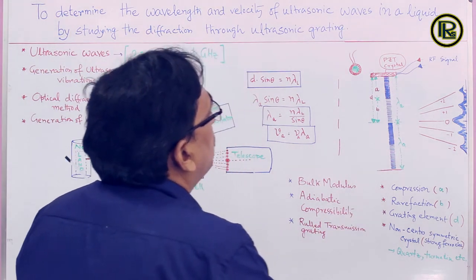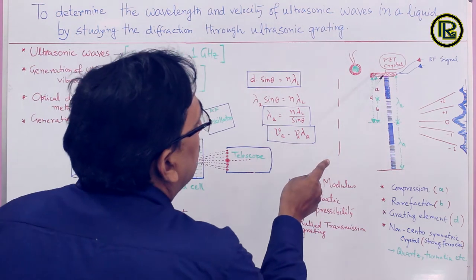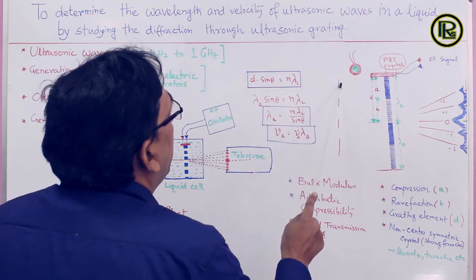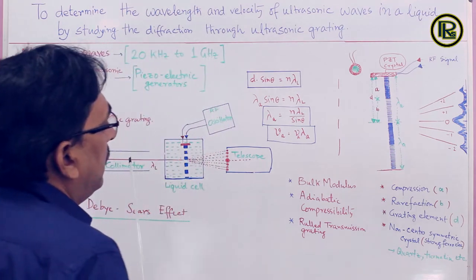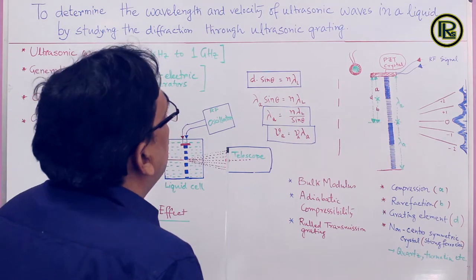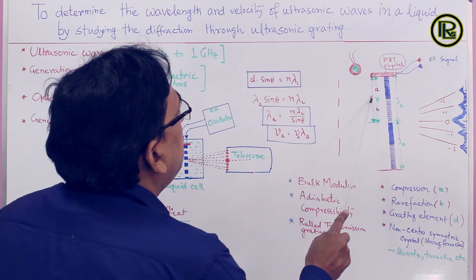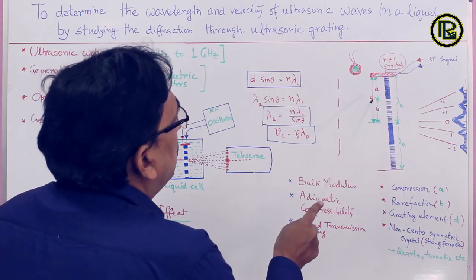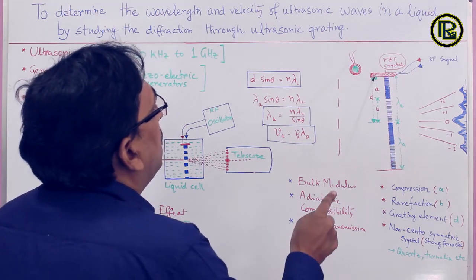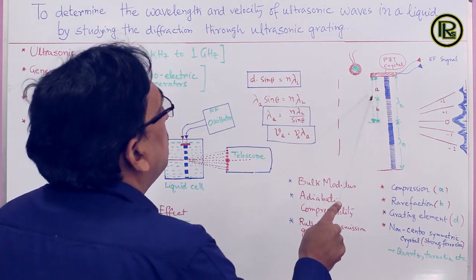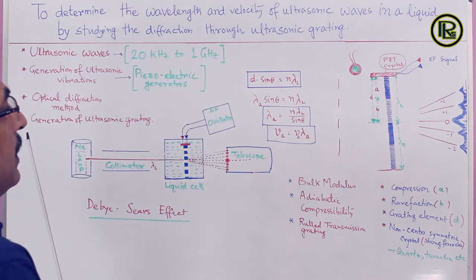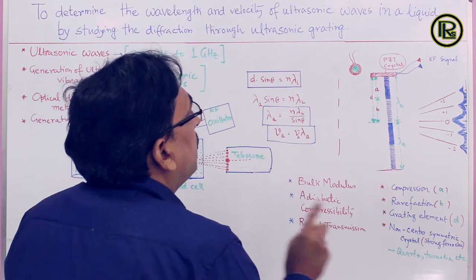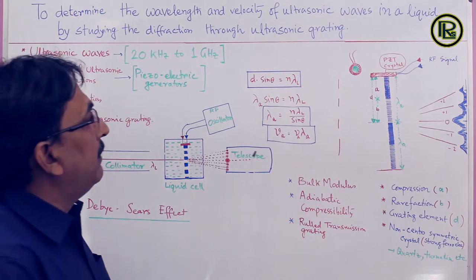The wavelength of the ultrasonic wave, λ_A, contains one compression and one rarefaction region. This is identical to a plane transmission grating with opaque and transparent parts. Therefore, the grating element D = A + B, where A is the length of the compression region and B is the length of the rarefaction region. This grating element is equal to the wavelength of the acoustic wave, so D = λ_A.